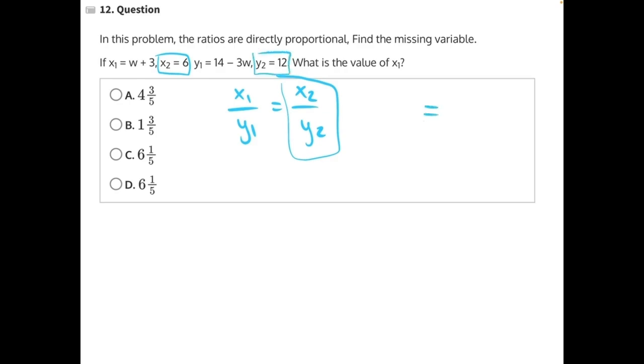So here we would have 6 over 12, and that will simplify down into 1 half. So our proportional ratio will look like this: x1 is w plus 3 over y1, which is 14 minus 3w, and that's equal to, instead of 6 over 12, 1 over 2.